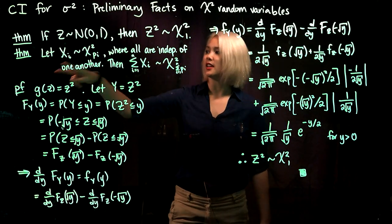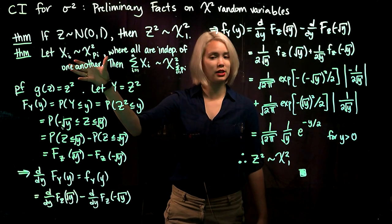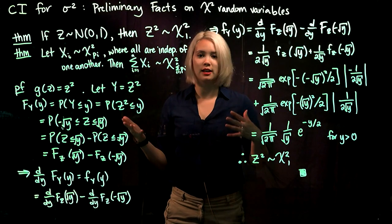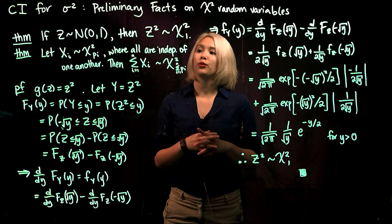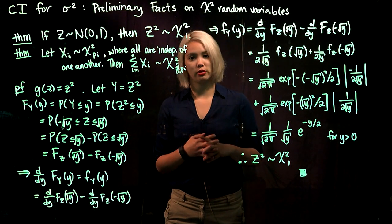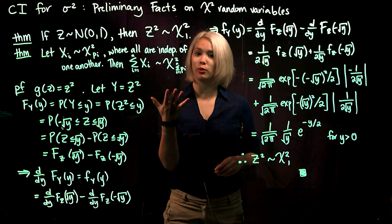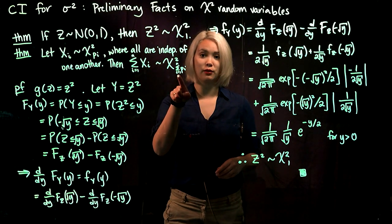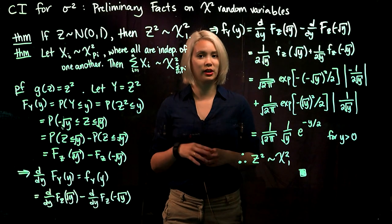The second theorem is: suppose that we have a bunch of chi-squared random variables, each with its own number of degrees of freedom p_i. Then if we take the sum of those chi-squared random variables, we end up with a chi-squared random variable, and to get the degrees of freedom, we just sum up all those degrees of freedom.